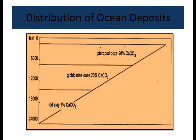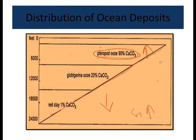In terms of distribution by depth: pteropod ooze at shallow levels has about 90% calcium carbonate. As depth increases, calcium content tends to decrease while silica content increases. In shallow waters calcium content is high, but in deep water calcium content decreases — from 90% at the surface down to 20%, and only about 1% calcium carbonate at 80,000 feet. This describes the distribution of ocean deposits by depth.